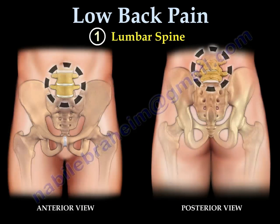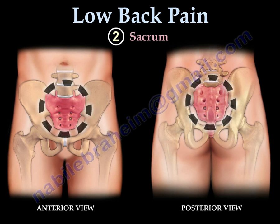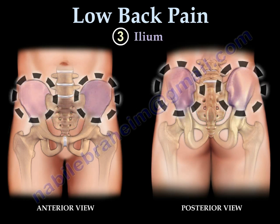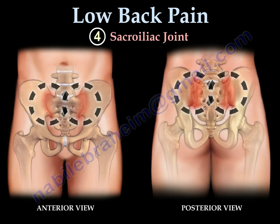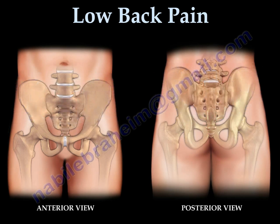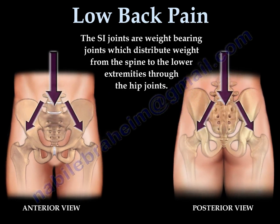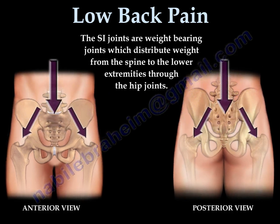The lumbar spine is connected to the sacrum. The sacrum is connected to the pelvic bones through the sacroiliac joints. The SI joints are weight-bearing joints which distribute weight from the spine to the lower extremities through the hip joints.